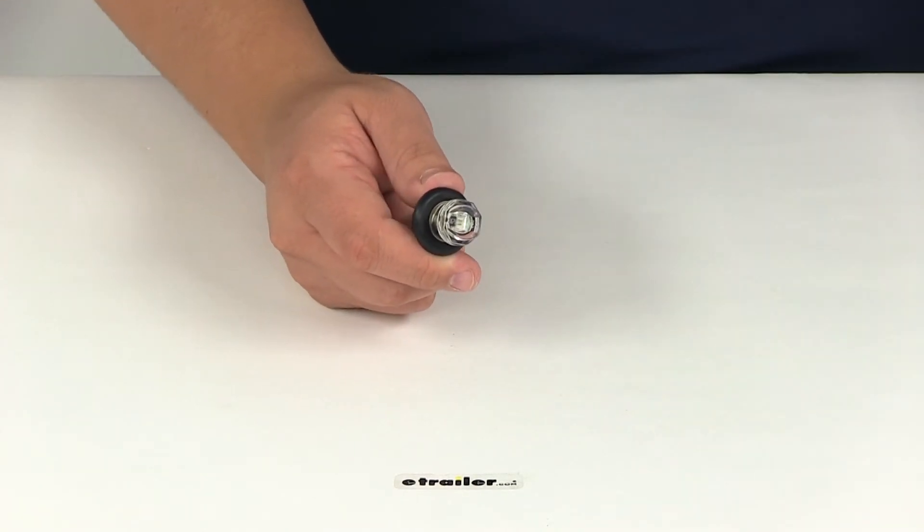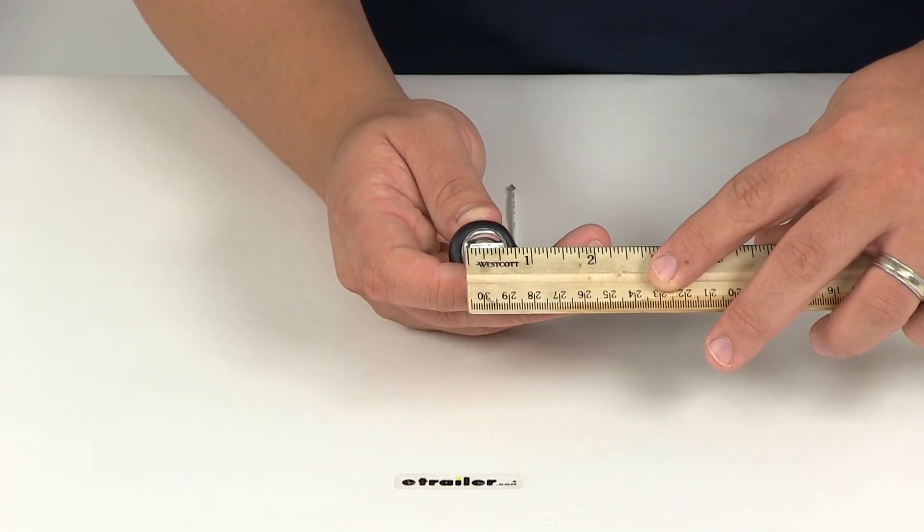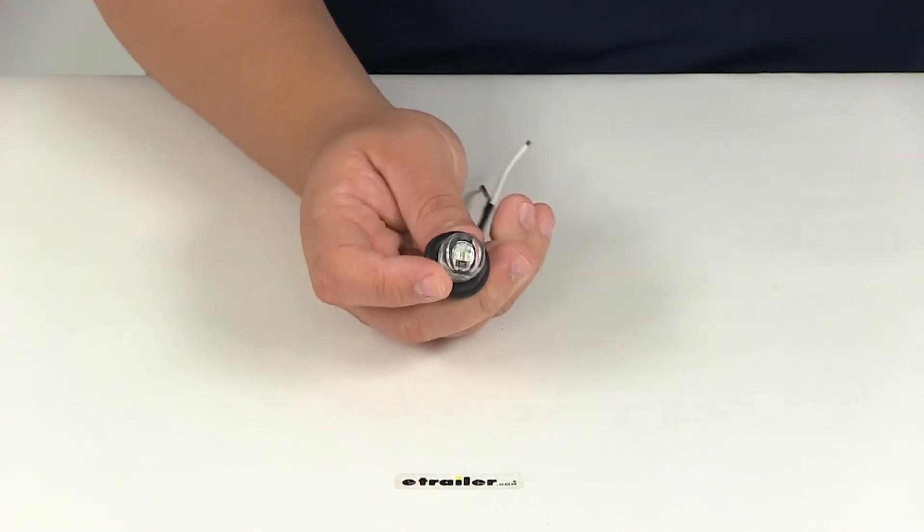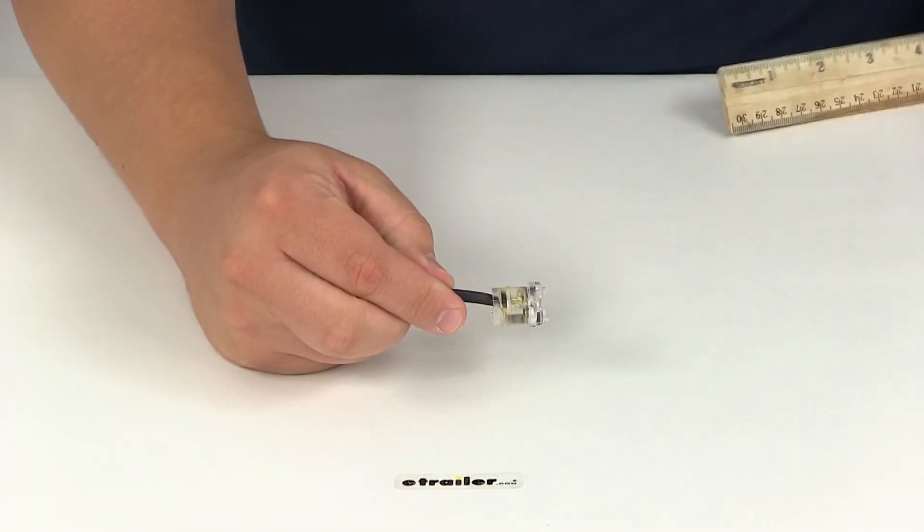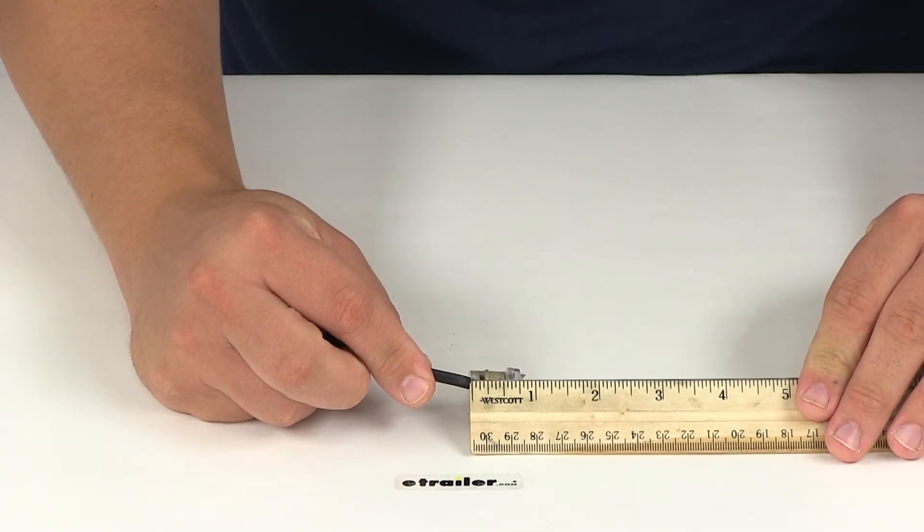If we take a closer look at the measurements, in diameter the light alone measures three quarters of an inch, not measuring the grommet, just measuring the lens. It measures 15/16 of an inch in depth.